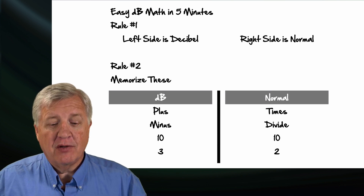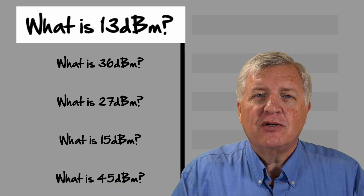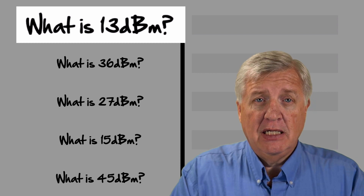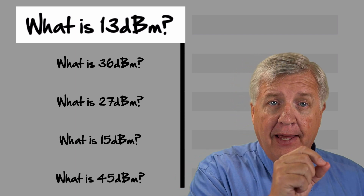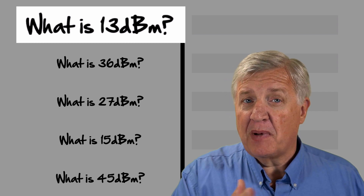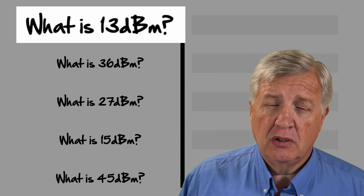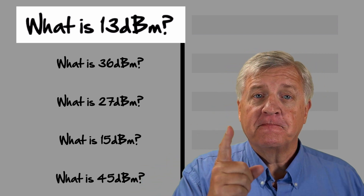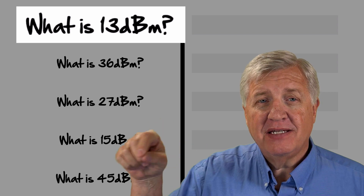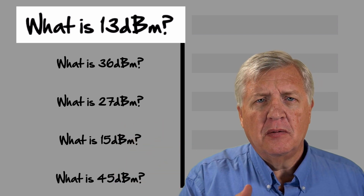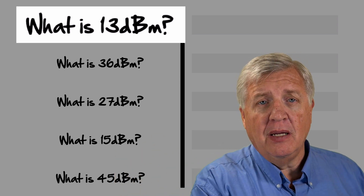Let's try a couple and see how this works. On the left side: what is 13 DBM? Let's convert it into its component parts — 13 is 10 plus 3. So on the left side of your page, just write 10 plus 3. Remember, left side is for DB only. Now to go over to the right side, we use those conversion rules: 10 stays a 10, plus becomes a times, and the 3 becomes a 2. So on the right side you get 10 times 2, or 20. 13 DBM is equal to 20 milliwatts.